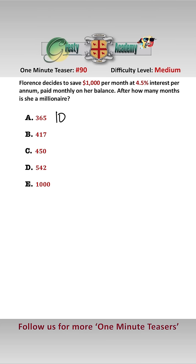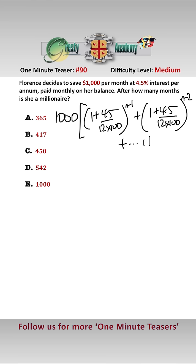We need to establish when 1,000 times (1 + 4.5 over 1200) to the power of n minus 1, plus (1 + 4.5 over 1200) to the power of n minus 2, plus 1 is greater than 1 million.